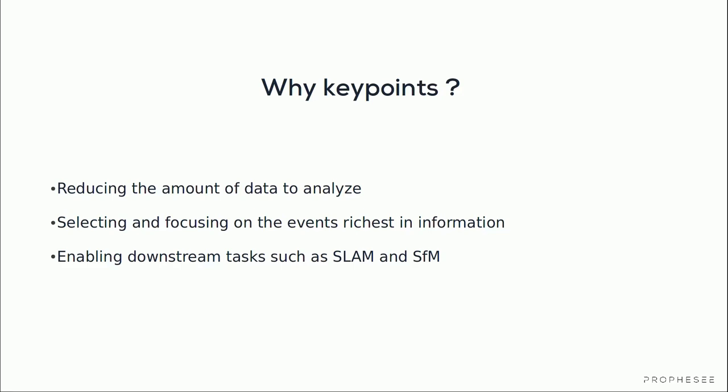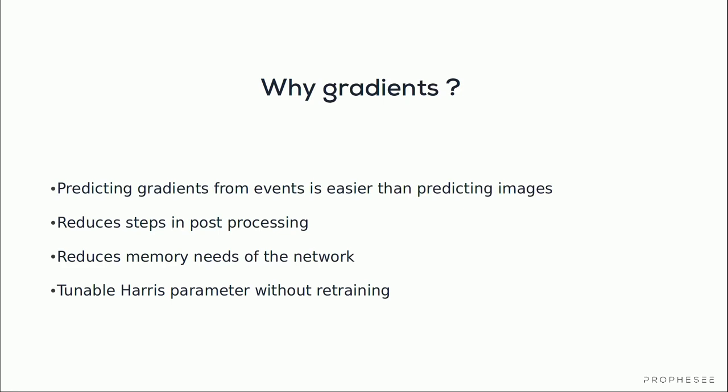Detecting stable keypoints from events through image gradients prediction comes from the hypothesis that recreating image gradients from an event stream should be easier than recreating the images themselves. The gradients will allow a precise and stable representation for corner detection and tracking.